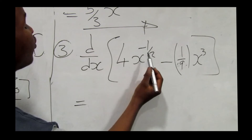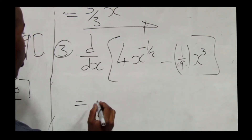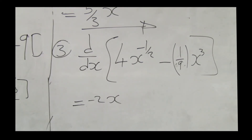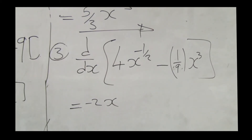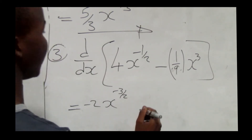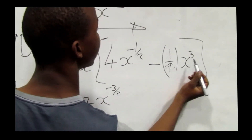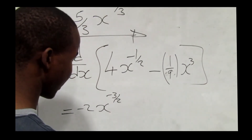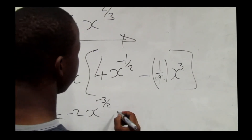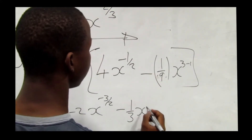For 4x to the power 1/2: the exponent 1/2 times 4 gives 4/2, which is 2. Then 1/2 minus 1 equals negative 1/2, giving us 2x to the power negative 1/2 — which is negative 3/2 when written as negative three over two. For the x³/9 term: 3 times 1/9 gives 1/3, and 3 minus 1 gives x squared.